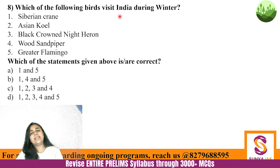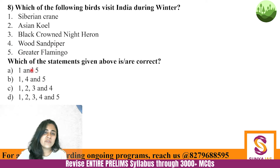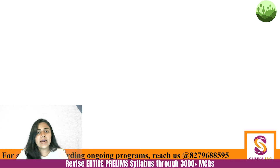Next question: which of the following birds visit India during winter — Siberian Crane, Asian Koel, Black Crowned Night Heron, Wood Sandpiper, Greater Flamingo? You need to memorize which migratory birds come to India in winter and which come in summer. When there is winter in the northern hemisphere, there is extreme winter in the Arctic and Siberian region because sun rays are falling directly on the Tropic of Capricorn.